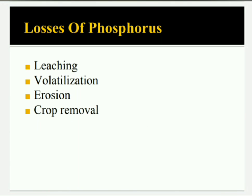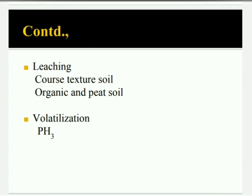Losses of phosphorus occur in four different forms: leaching, volatilization, erosion, and crop removal. Leaching is more common in coarse textured soils because they have less water holding capacity. More downward movement of water occurs in organic and peat soils, so they also have more leaching. Loss of phosphorus also occurs in the form of PH3, that is phosphorus trihydride, and it occurs at all pH levels.